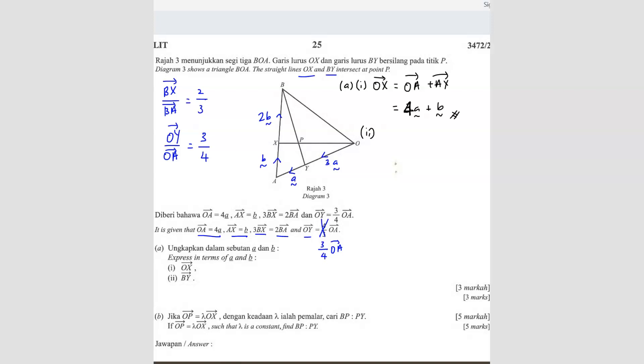The second part. They said BY. BY is where? So BY, you can form your vector will be BA plus AY. So BA is going to be negative 3B. And then AY is negative A. So this one also done.